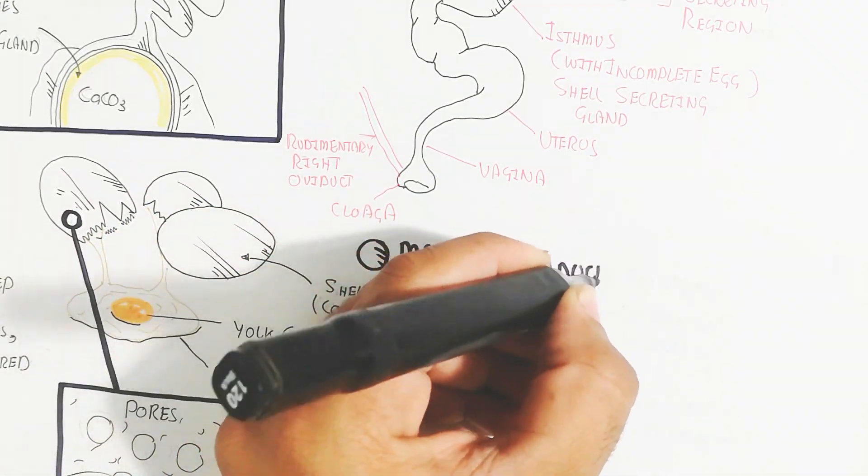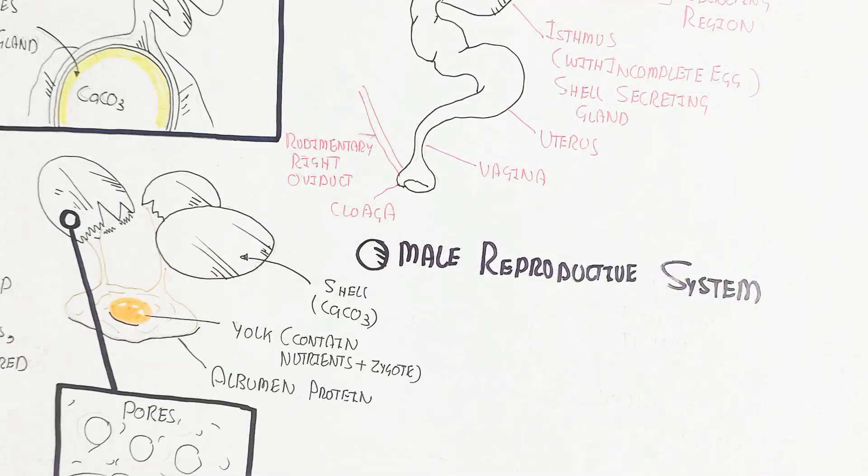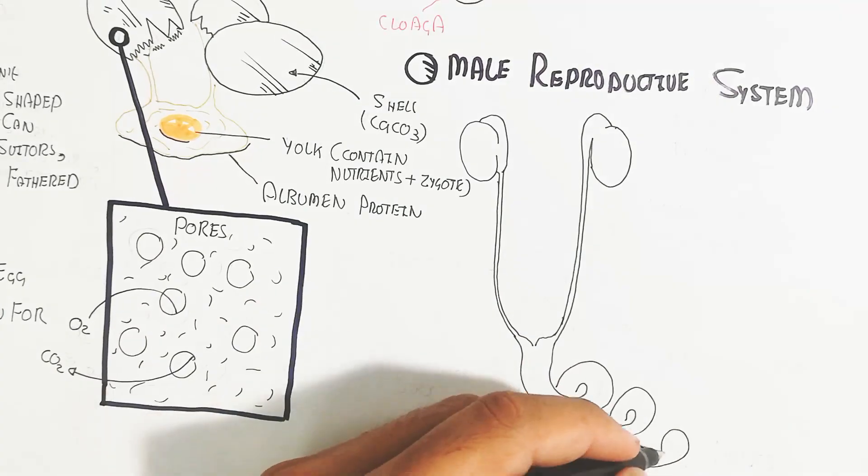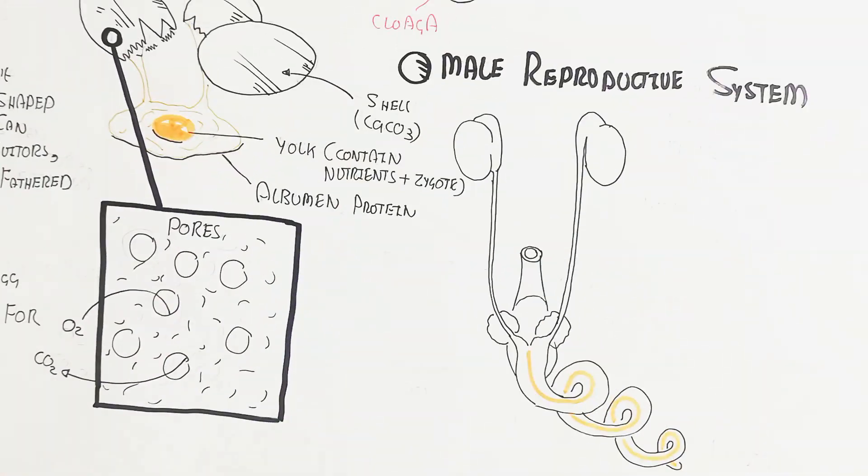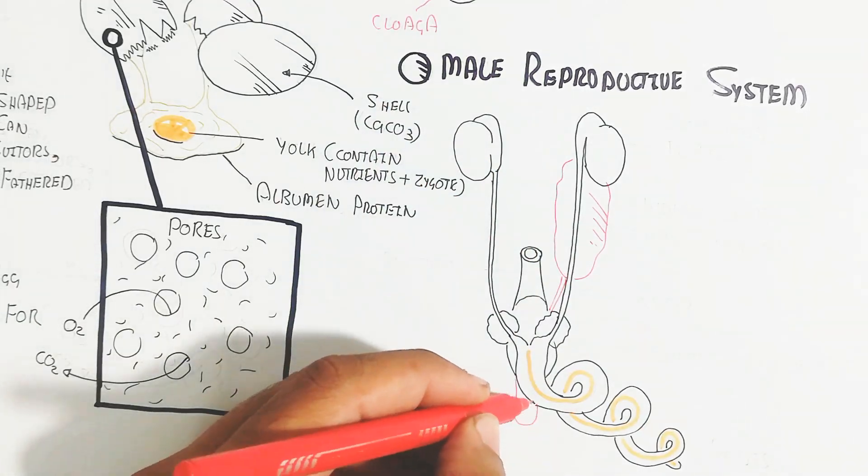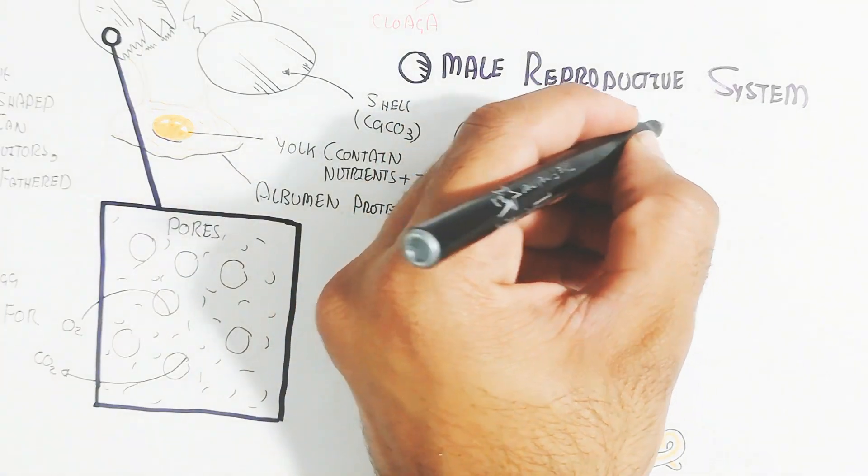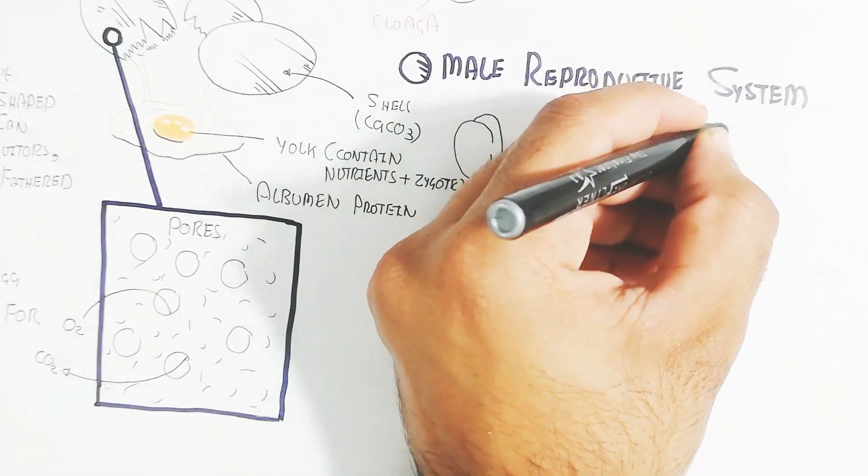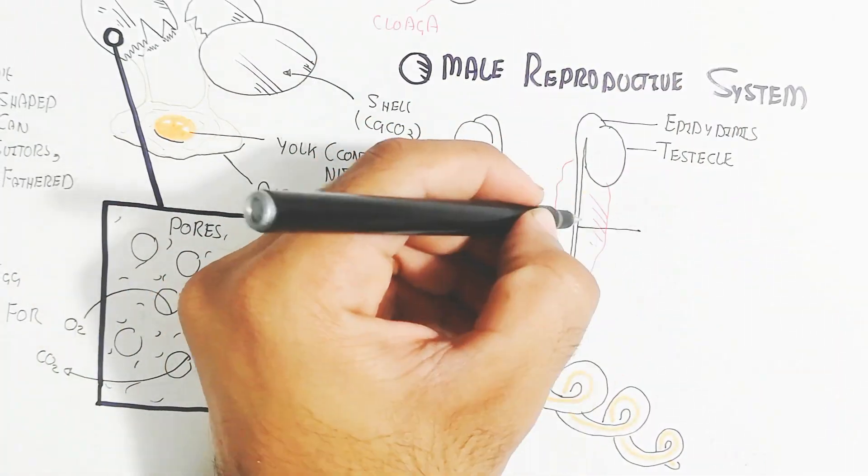The male reproductive system is different compared to hen because it's a different family. Here you can see the epididymis and testicles. This is the kidney, the penis as the reproductive copulatory organ, and the testis.